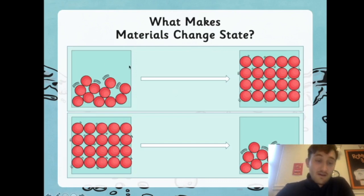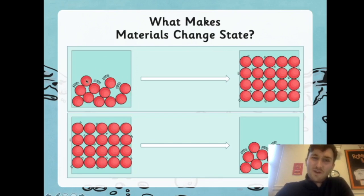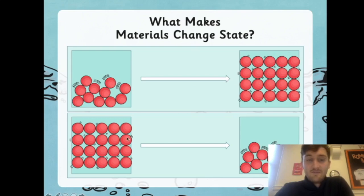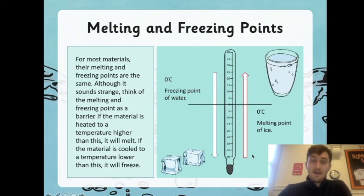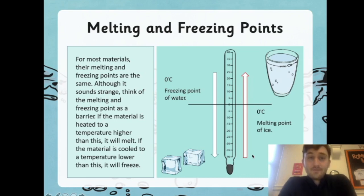So we can see here: at the top we've got our liquids — they can move around but are still quite compact. Then it freezes into a solid. And when a solid melts back into a liquid, that cycle is complete.